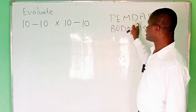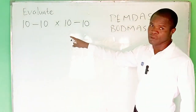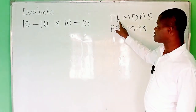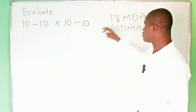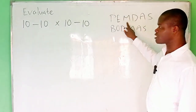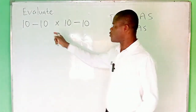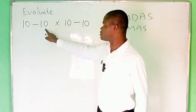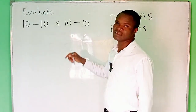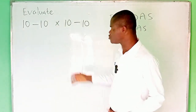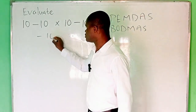Using your PEMDAS, the first thing is parenthesis — there is no parenthesis here. The next is exponential — there is no exponential here. The next is multiplication. Is there multiplication here? Yes. In the expression, we are to multiply minus 10 times 10, which gives us minus 100.